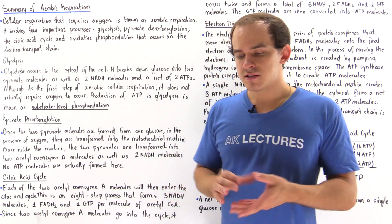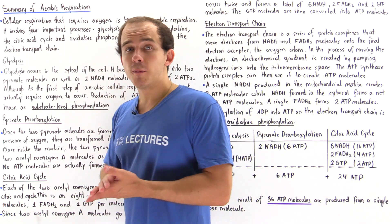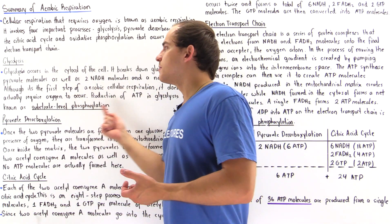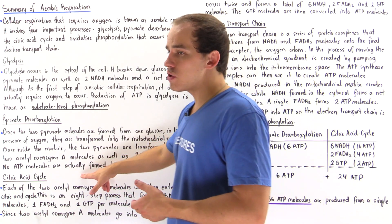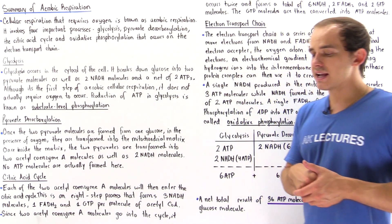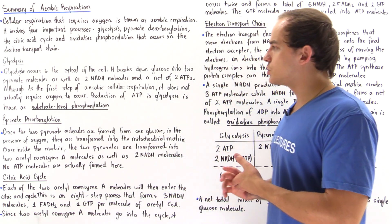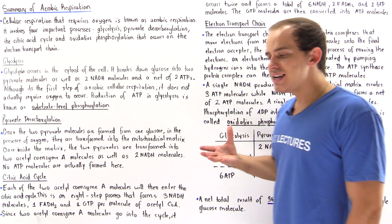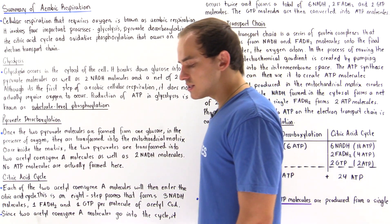Aerobic cellular respiration is the process by which a cell uses oxygen to synthesize ATP molecules. Aerobic cellular respiration involves four important processes: glycolysis, pyruvate decarboxylation, the citric acid cycle (also known as the Krebs cycle or tricarboxylic acid cycle), and the electron transport chain involving oxidative phosphorylation. We'll discuss each process briefly and summarize the results in a table showing how many ATP molecules are synthesized by each process.